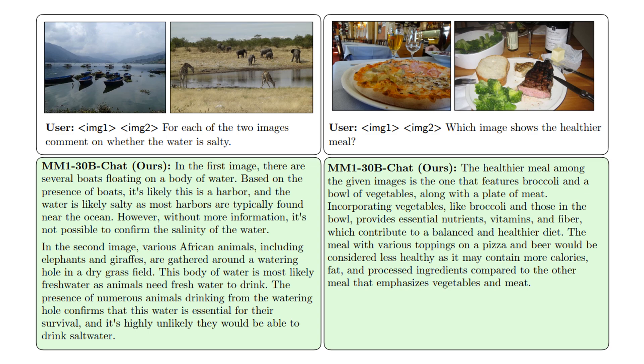In the left, two images are shown to MM1 model, and it is asked to comment on if the water is salty. The MM1 response is based on location of the water and the fact that animals drink fresh water. You can read the explanations provided by MM1. In the right, two images of food are shown to MM1 model, and it is asked to explain which food is healthier. The MM1 response is based on the presence of broccoli, vegetables, and meat. A real-world application of this capability is to show images of food to MM1 model and ask for its comments about healthiness of the food. For example, it can be used in restaurants and food factories to make healthier foods.